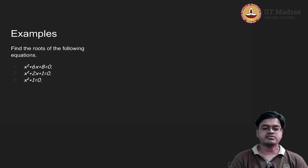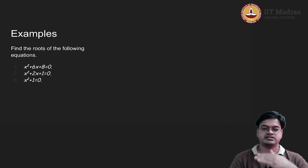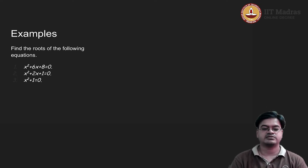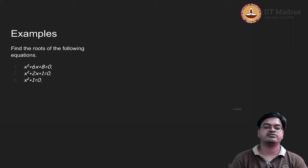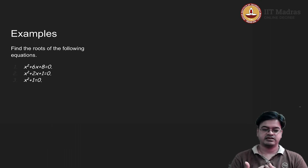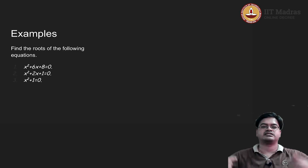Since a > 0, the graph opens up and attains a minimum. The axis of symmetry is x = -3, so putting x = -3 into the expression gives a negative value. That means the y-value at the vertex is negative. Since the curve opens up and the minimum is below the x-axis, the curve will intersect the x-axis at two points.